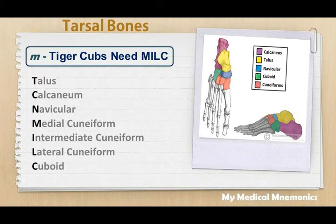In the distal row, the 3 cuneiforms are there — medial, intermediate, and lateral cuneiform — and cuboid. Navicular is interposed between the proximal row and distal row, mainly between the 3 cuneiforms and talus.